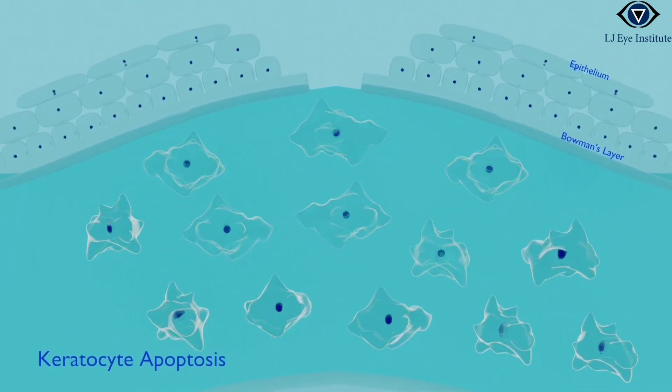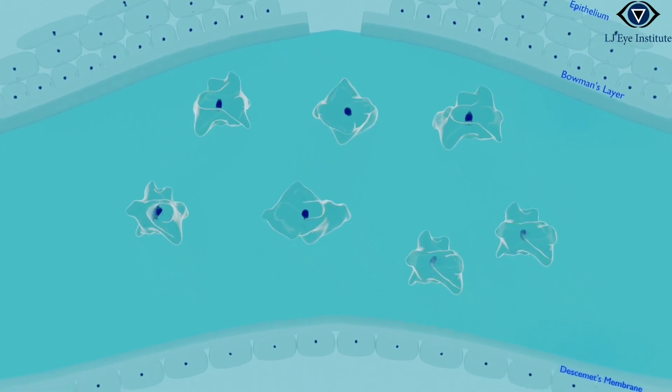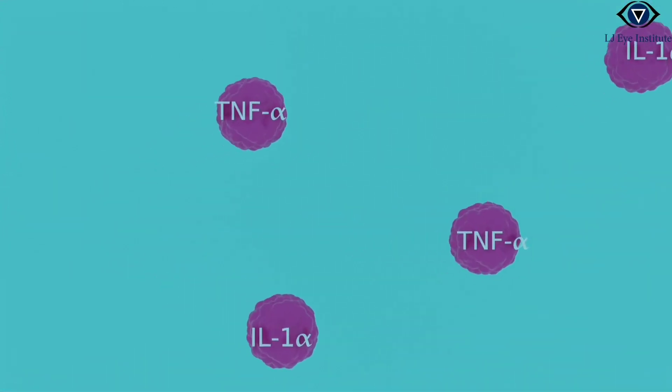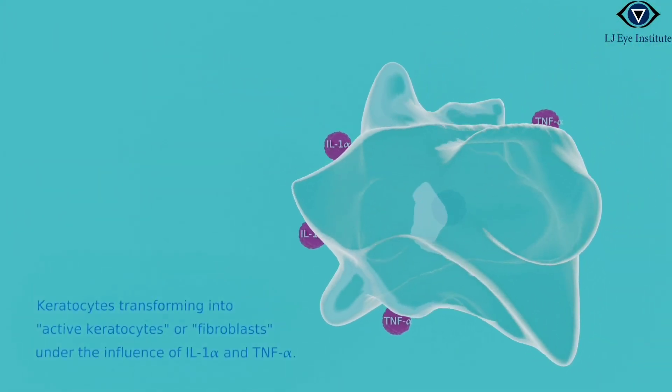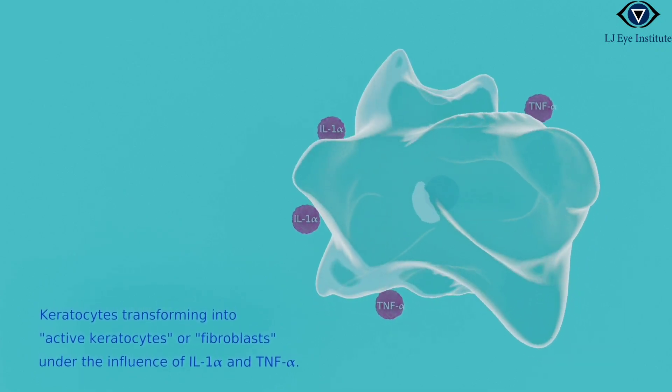Some among its rank make the ultimate sacrifice, undergoing apoptosis, a programmed cell death. Meanwhile, the other keratocytes, responding to signals like IL-1 alpha and TNF alpha from the corneal epithelium, undergo a dramatic transformation. They become active fibroblasts, donning a new identity to sculpt a fresh extracellular matrix.